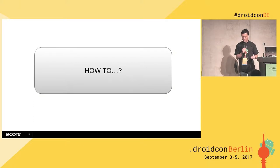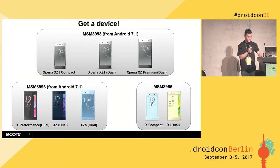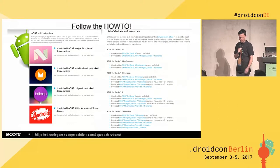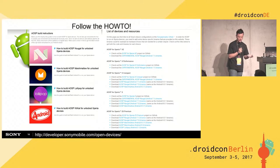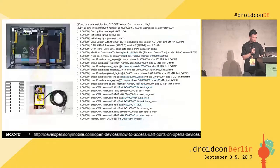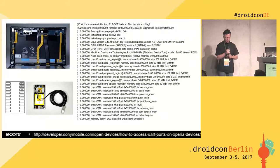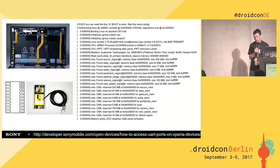Getting started is really simple. You pick one of our devices for the latest Android, or an older device for older Android versions. You unlock the bootloader and follow our how-to. We provide all the information on GitHub and try to be as open as possible with both knowledge and forum support. For those who want to go deeper into the hardware side, we provide information on how to connect the UART debugger on our devices — though you do have to dismantle the device to access the port.